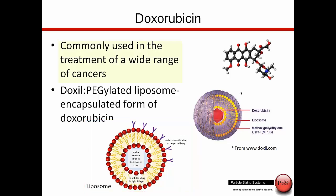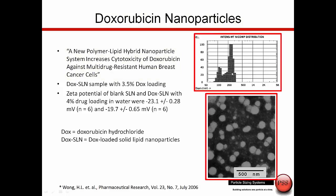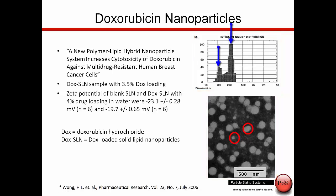A lot of these drugs are for anti-cancer applications. This is an article I found on doxorubicin nanoparticles — a polymer-lipid hybrid nanoparticle. The researchers needed to know the particle size. Here is the SEM photograph, and here is a result from the NICOMP DLS system. I see smaller particles and then larger ones, and the bimodal is split here again using the NICOMP DLS system — a much more realistic representation of the particle size distribution.